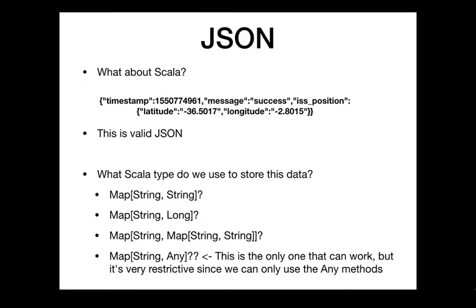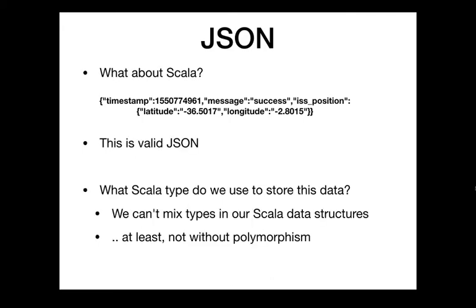Using Map[String, Any] works, but it's kind of awful because now we only have the methods from the Any class, which is almost nothing useful — we can toString things, check equality, but that doesn't really give us the functionality we want from these values. If only there were a way to mix types without losing too much functionality — this is where we're going to use polymorphism.